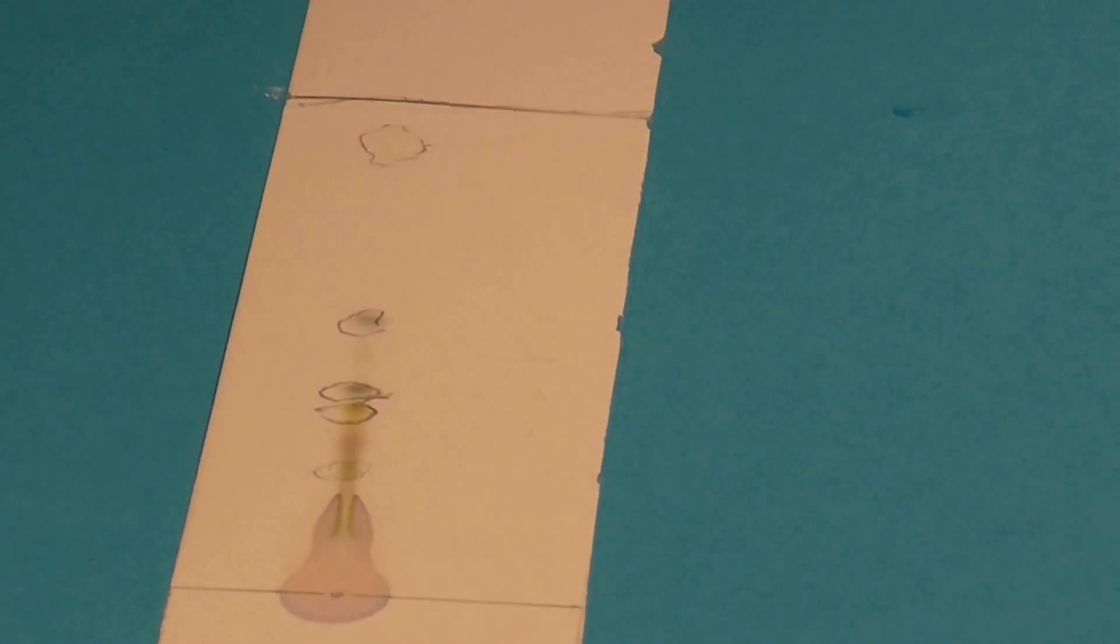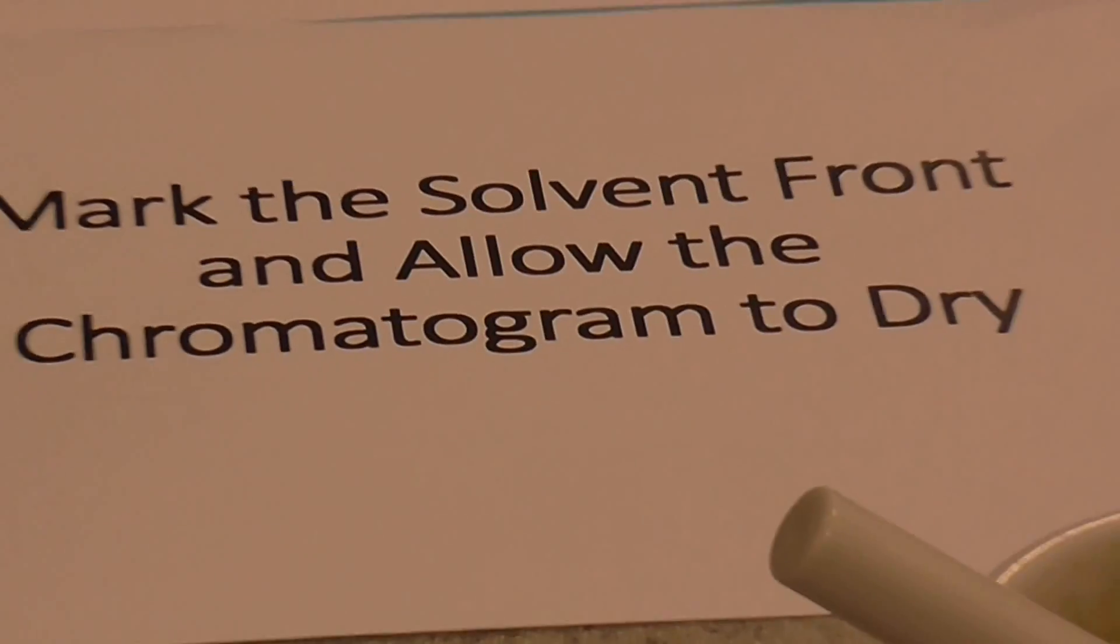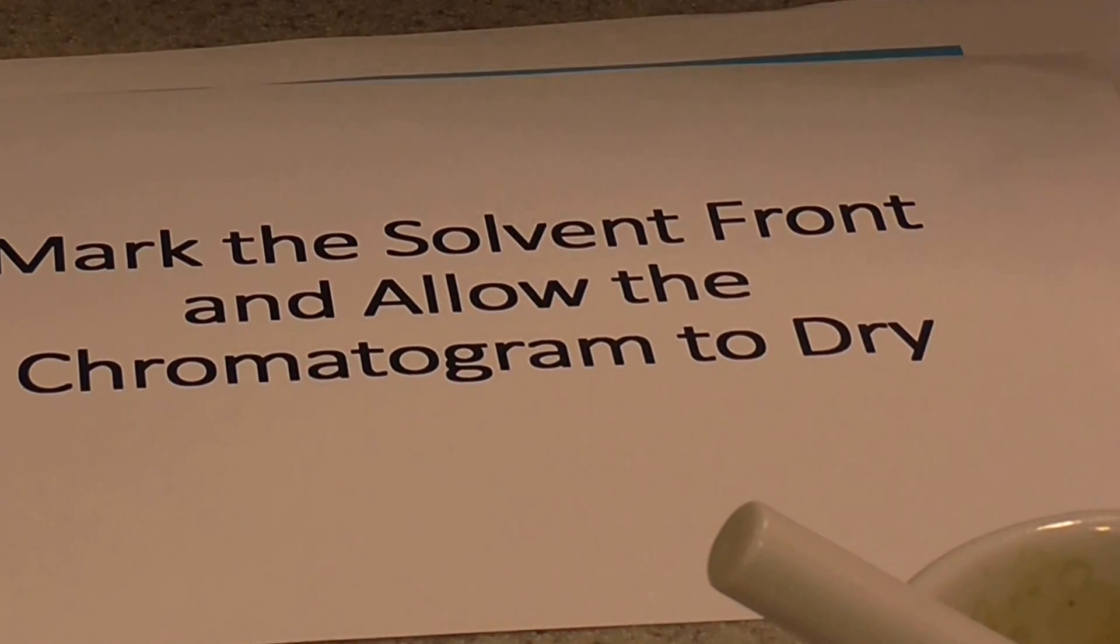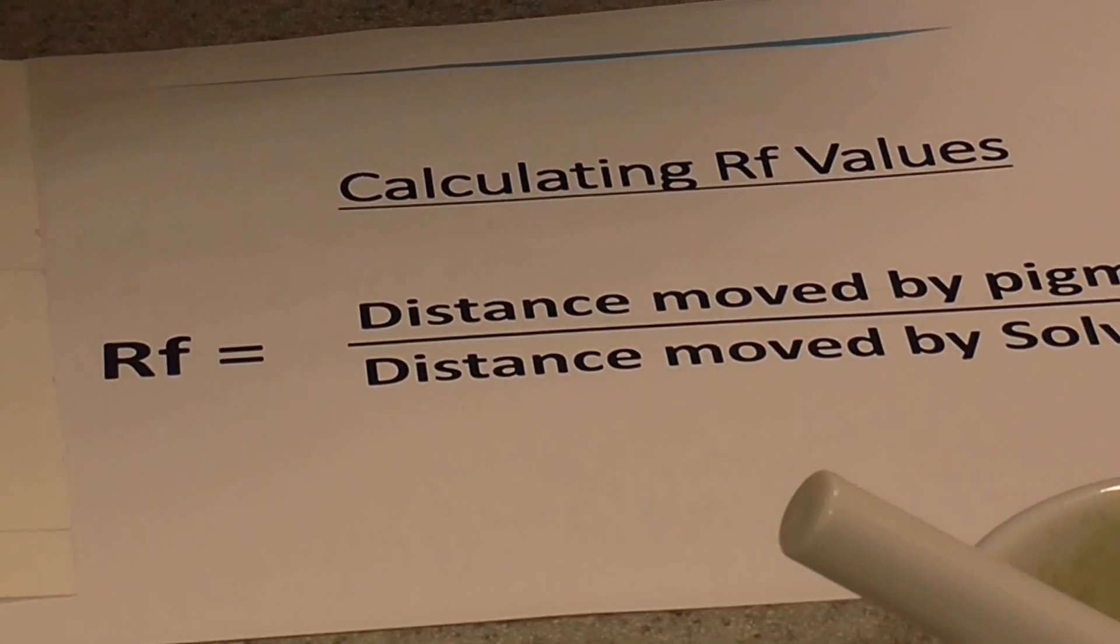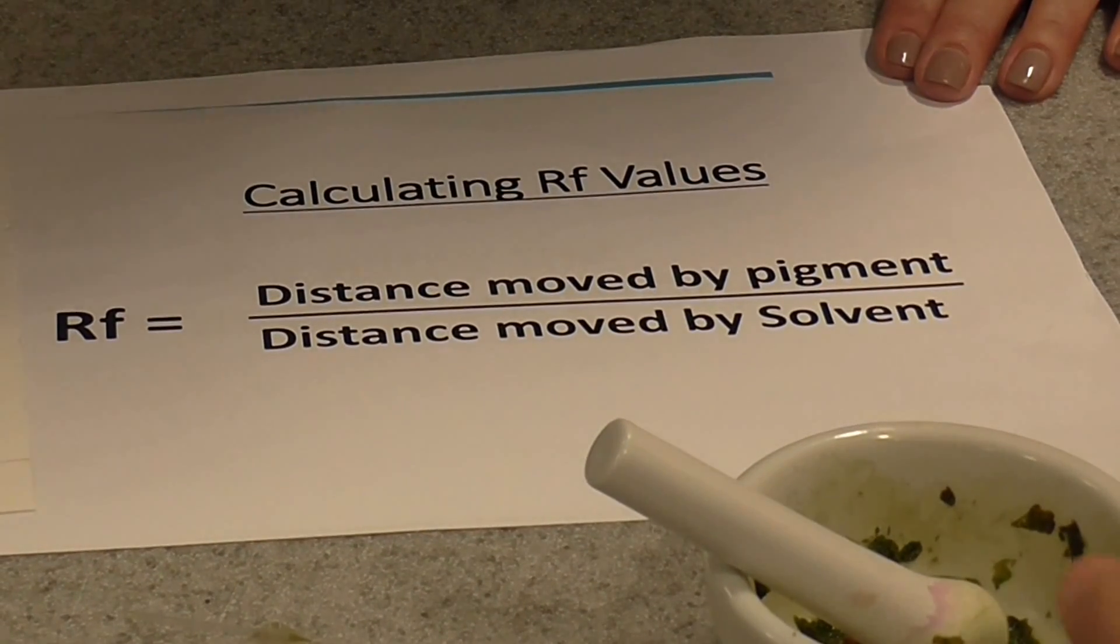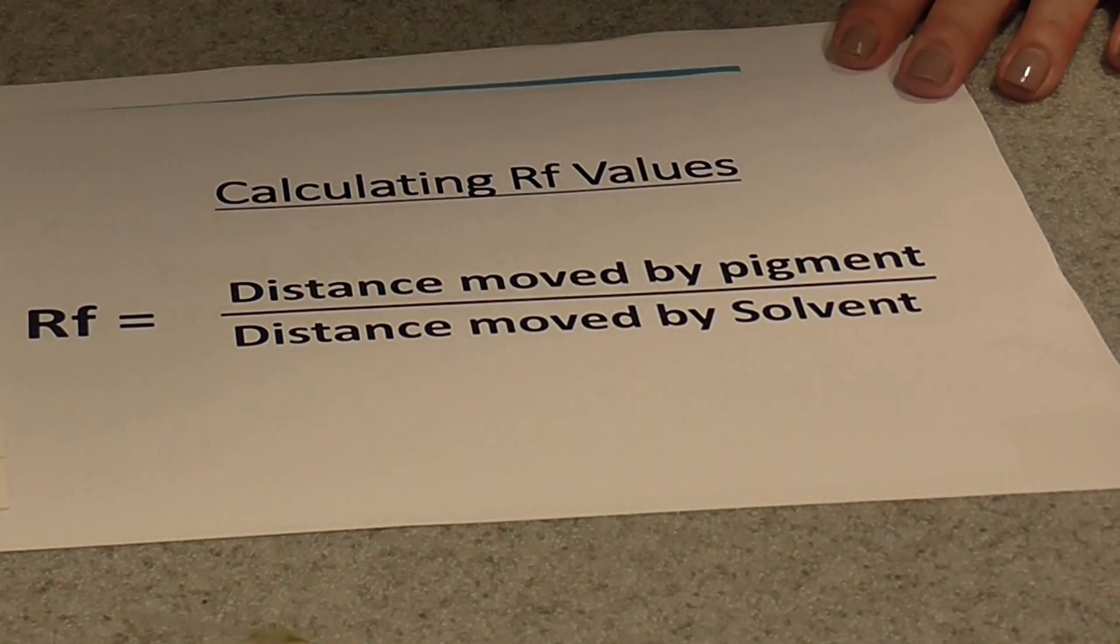Now, once you've allowed your chromatogram to dry, you can have a look at your spots and you can actually work out what they are. So to do this, what we have to do is work out an RF value for each patch of pigment that we've got on our chromatogram there. So work an RF value out. It's very simple.